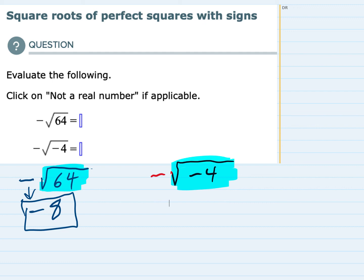So I can't get a negative by taking a real number and multiplying it with itself. So because of that this is not a real number for this second example.